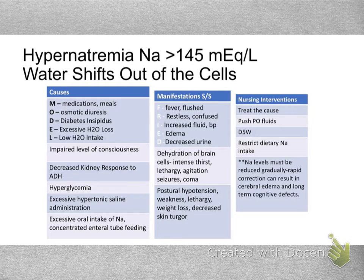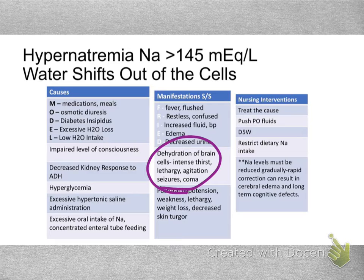For example, with hyperglycemia you're going to have excessive urine output — polyuria. Thinking about where the fluid is coming in and how the fluid is going out impacts your sodium. With sodium imbalances, we have a lot of neurological problems. Because of the dehydration of those brain cells, you're going to see confusion, agitation, and in severe cases, seizure and coma.